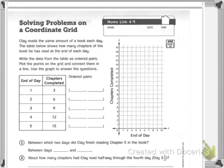It says Clay reads the same amount of a book each day. The table below shows how many chapters of the book he has read at the end of the day. Write the data from the table as ordered pairs. Plot the points on the grid and connect them in a line. Use the graph to answer the questions.